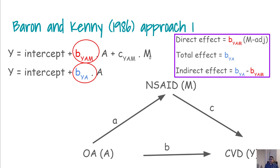For the first regression you are getting b_YAM, which is the adjusted effect of the treatment on the outcome, and the adjustment factor is the M variable. And you are also getting c_YAM, which is basically the coefficient of the mediator variable in this regression.